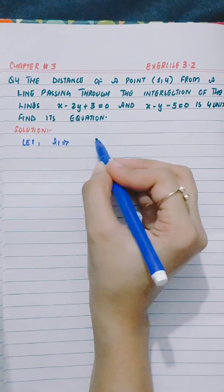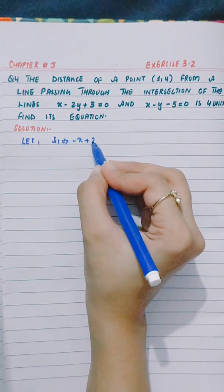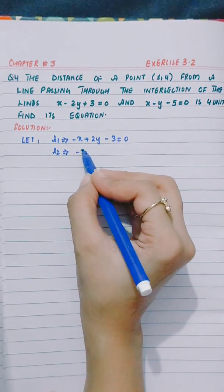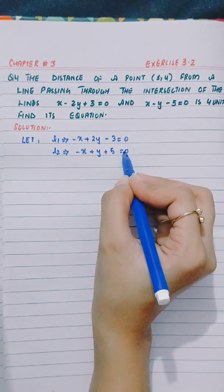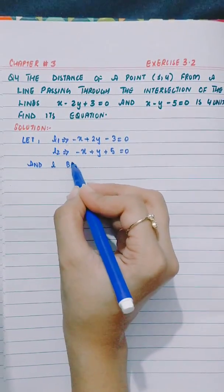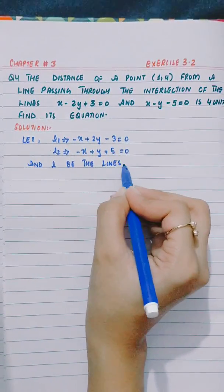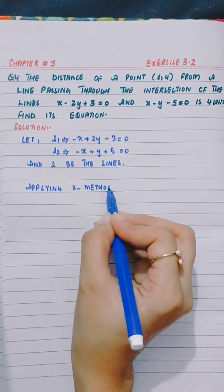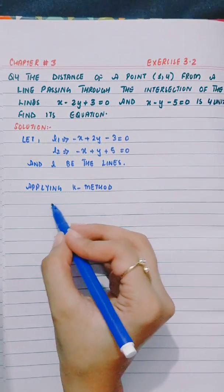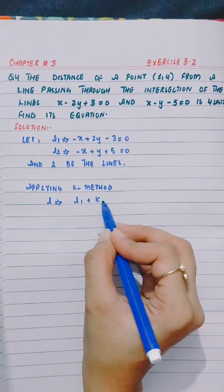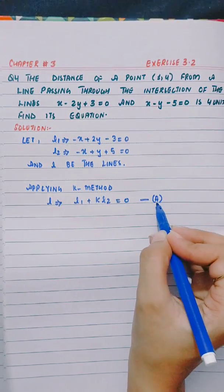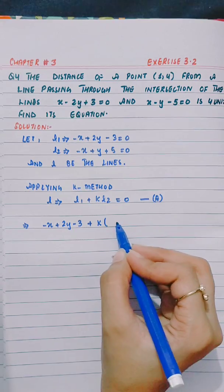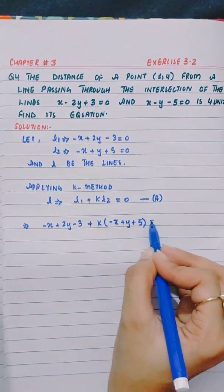Let l1 equal to minus x plus 2y minus 3 equals 0, and l2 equal to minus x plus y plus 5 equals 0, and let l be the line. Applying the k-method, with minus sign common, the method gives: l equals l1 plus k times l2 equals 0. This equation is: minus x plus 2y minus 3 plus k times minus x plus y plus 5 equals 0.